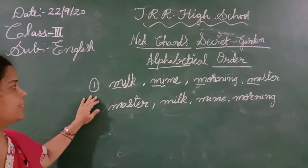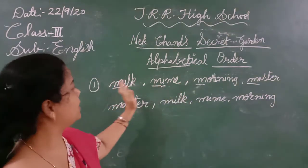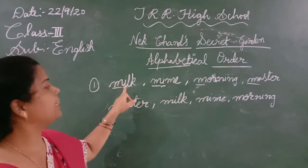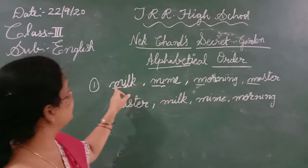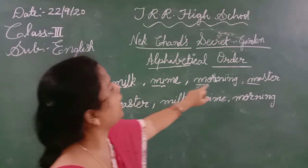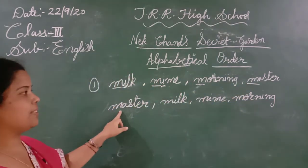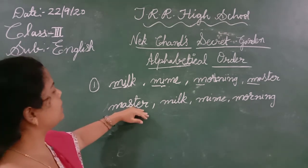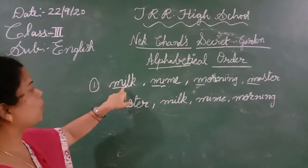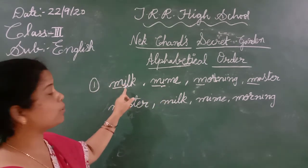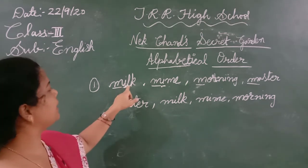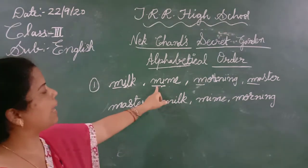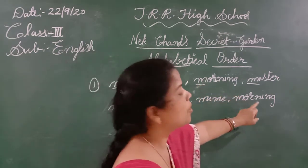So once again — all words are starting with M itself. When all words start with M, we have to see the next letter. The second letters are I, I, O, and A. So we wrote master first, as it starts with A. Then for the two words with I, we looked at the third letter — L comes before M — so milk is second, mine is third, and morning is last.